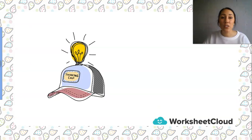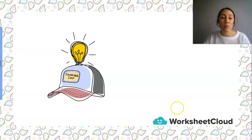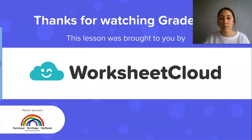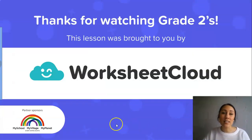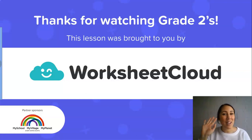Grade 2s, you were very clever today in learning all about story sums. I hope you remember all the steps: circle the important words, try to draw a picture or do your working out, and set up your sum with three steps — your number sentence, your working out, and then your answer with your label. Until the next time we can learn something together again, I hope you have a lovely afternoon or day further. Goodbye, Grade 2s.